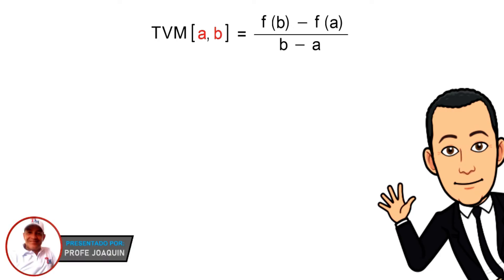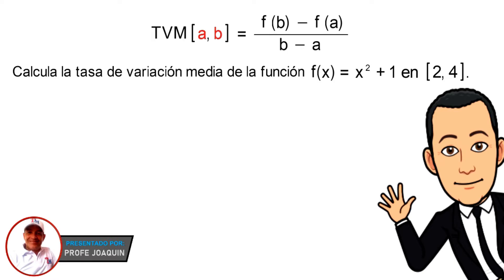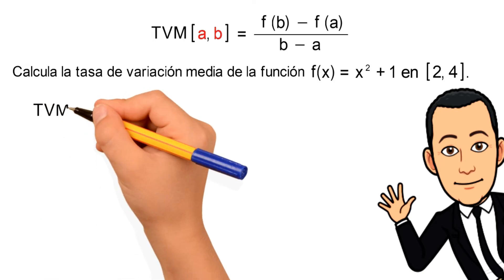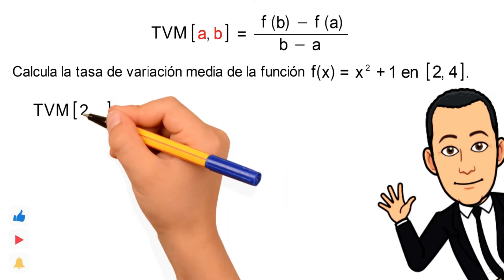A continuación, veamos un ejemplo. Calcula la tasa de variación media de la función f(x) = x² + 1 en el intervalo cerrado [2, 4]. Comenzaremos entonces planteando que la tasa de variación media en el intervalo cerrado [2, 4]...